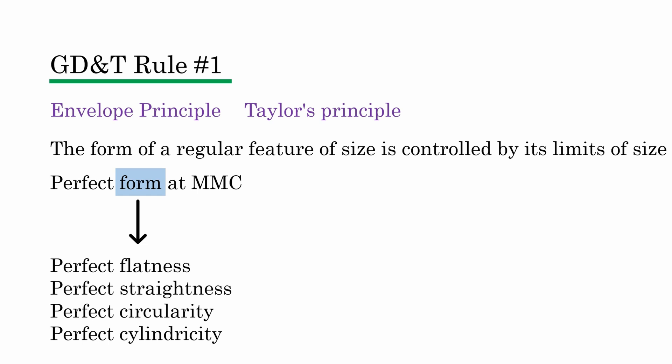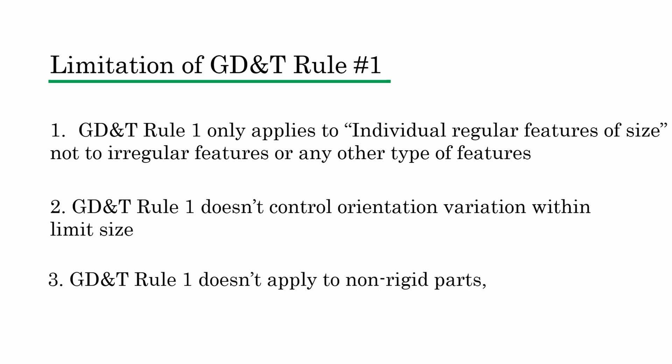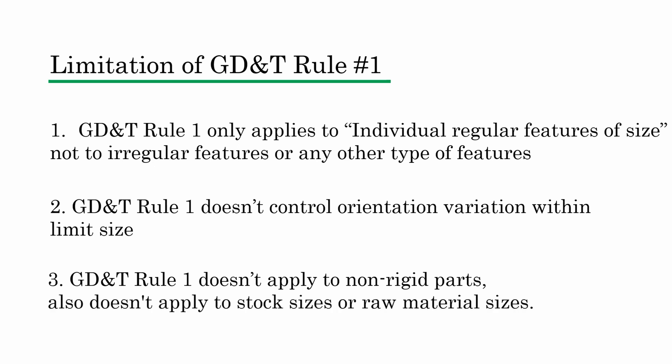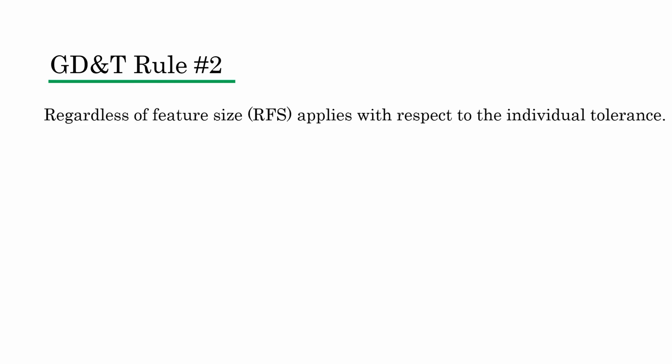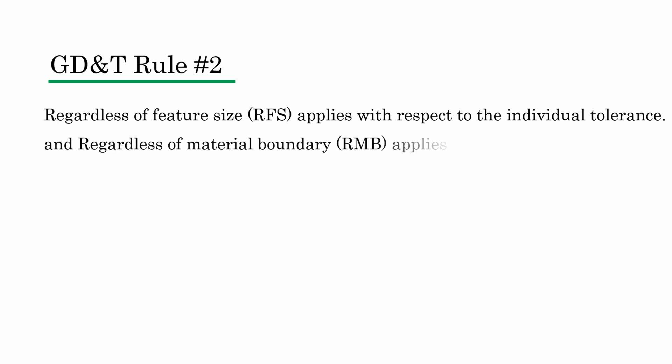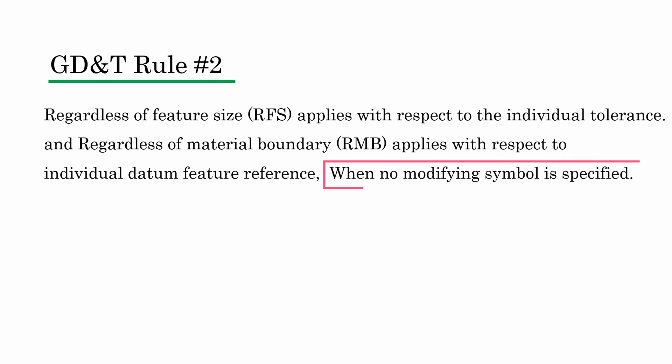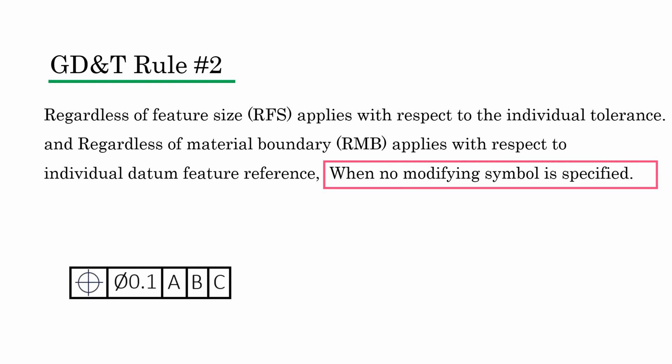The third limitation of GD&T rule 1 is that it does not apply to non-rigid parts like rubber components, belts, or any flexible components. It also does not apply to stock size or raw material sizes on drawings. So those are the three key limitations of rule 1. GD&T rule 1 can also be overridden in three different ways, but to understand that, we first need to understand GD&T rule 2. Rule 2 states that regardless of feature size applies with respect to individual tolerance, and regardless of material boundary applies with respect to individual datum reference, when no modifying symbol is specified in a GD&T feature control frame.